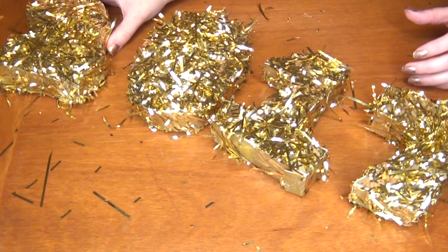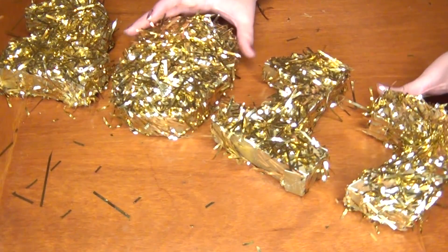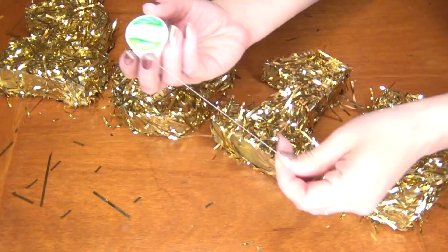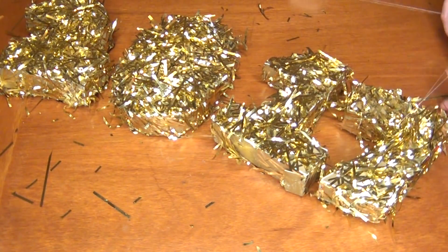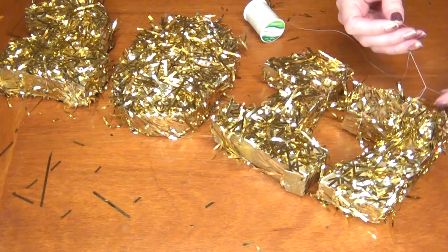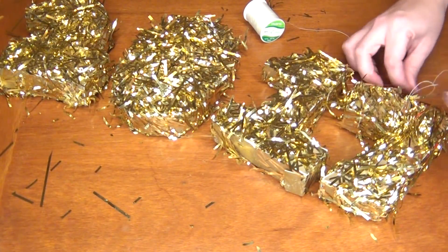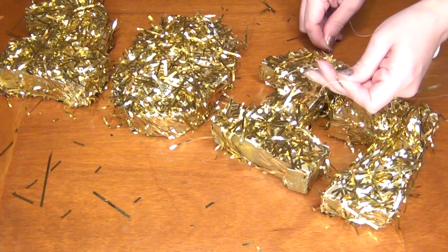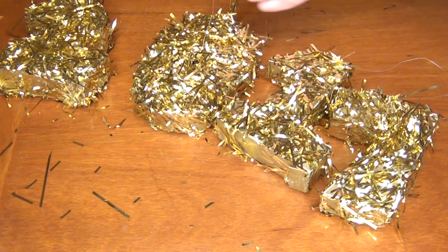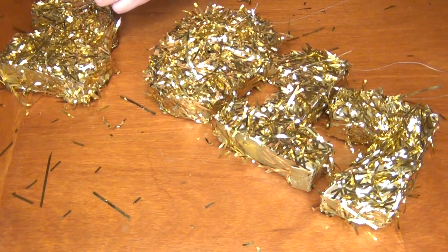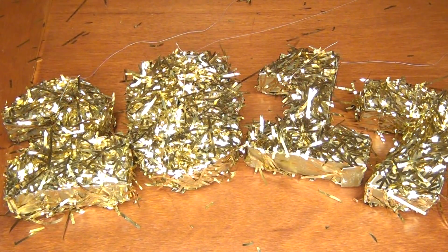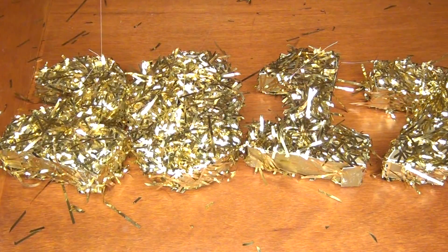Once you've closed up the bottoms of each of your numbers, your little pinatas are complete. Simply take some string or twine of your choice and tie a three to four foot length around the top of each of your numbers. Just do a regular square knot and make sure that you have enough length above each of your numbers to hang them evenly from your ceiling. You can hang them with hooks, push pins, or even some duct tape.